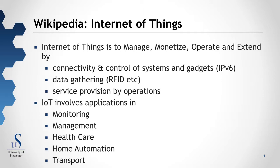The next paper on the internet of things comes from Wikipedia, which defines it quite extensively. It describes the internet of things as a means to manage, monetize, operate and extend by providing connectivity and control of systems and gadgets. It is also seen as an important part of IP version 6. Data gathering involves items around us — credit cards and other devices — providing new data into the systems. The most common way of doing this is utilizing RFID, though several options exist. Service provision through operations means we get data from gadgets we control and are also able to control them as part of internet operations.